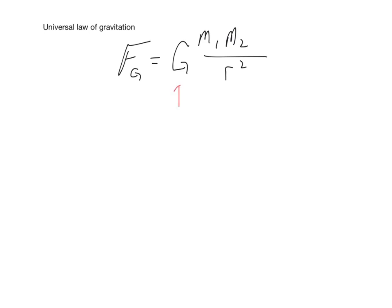G is the universal constant. That is the value 6.67 times 10 to the negative 11th. And R is the center to center separation distance.